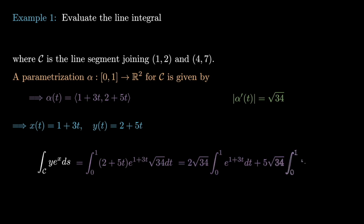We write this more explicitly as 2√34 times the integral of e^(1+3t) dt plus 5√34 times the integral from 0 to 1 of t·e^(1+3t) dt. The first is evaluated using elementary techniques; the second uses integration by parts. The final answer is (2√34/3)·(e⁴ − e) + (5√34/9)·(e + 2e⁴).